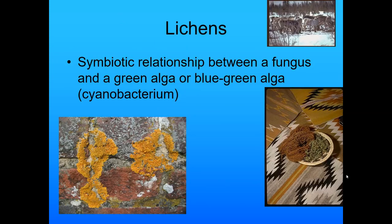Lichens are a symbiotic relationship between a fungus and a green algae or blue-green algae. You're going to look at a couple of different types of lichens in the lab. We use them to color things, and reindeer use them as food.